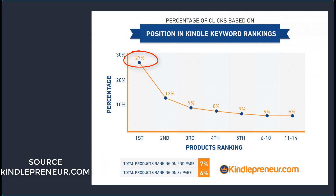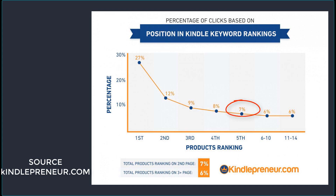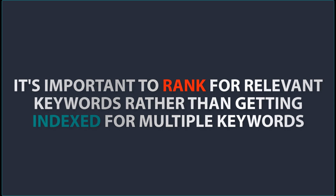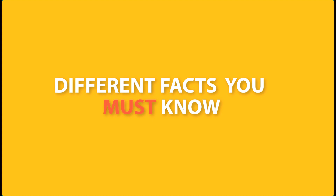Research by Kindlepreneur has shown that if your book is ranked first for a keyword, it has a 27% probability of getting clicked. Second place gets 12%, third place 9%, fourth place 8%, fifth place 7%, and sixth through tenth place gets around 6% — decreasing as ranking drops. This clearly shows your book needs to rank to get clicks, and without clicks there are no sales. It is crucial to rank for a specific keyword rather than just being indexed for random keywords.